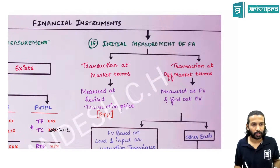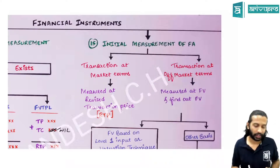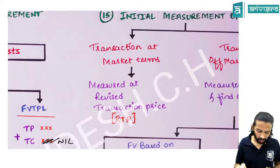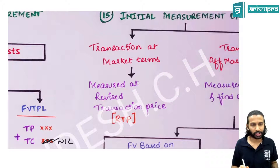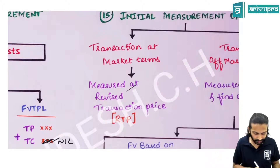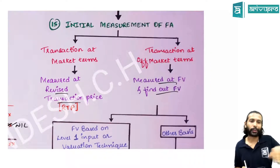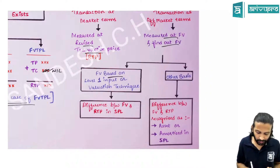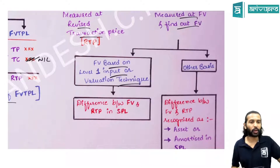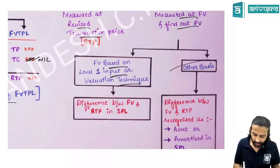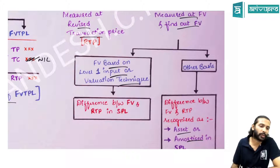Initial measurement: first check whether the transaction is at market terms or off-market terms. If at market terms, measure at RTP (revised transaction price, adjusted for transaction costs). If at off-market price, determine fair value using Level 1 inputs or a valuation technique — the difference between RTP and fair value goes to P&L immediately. If using present value of cash flows, the difference is amortized to P&L.